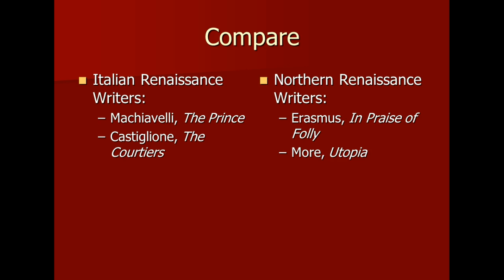In class — and this will actually be after our first exam — we're going to compare the Italian Renaissance writers: Machiavelli's The Prince, Castiglione's The Book of the Courtier, with Erasmus's In Praise of Folly and Thomas More's Utopia. So if you want to get a head start, take a look at what each one contributed to the Renaissance — what was the point of The Prince, what was the point of The Courtier, not just the basics but also the big picture overall effect. Same thing with In Praise of Folly and More's Utopia, and try to see what the northern Renaissance writers have in common with those Italian Renaissance writers.